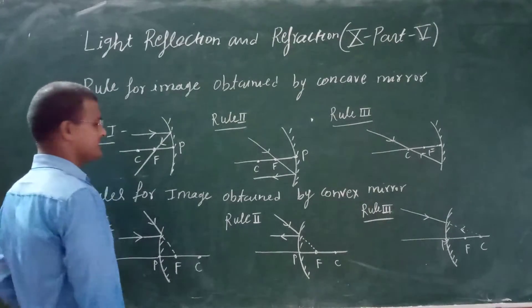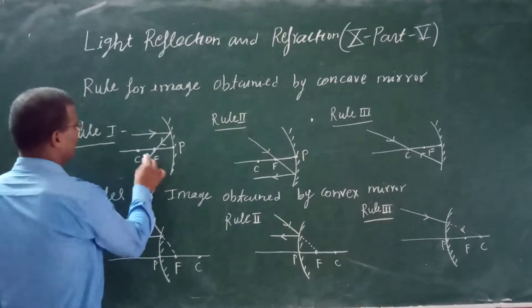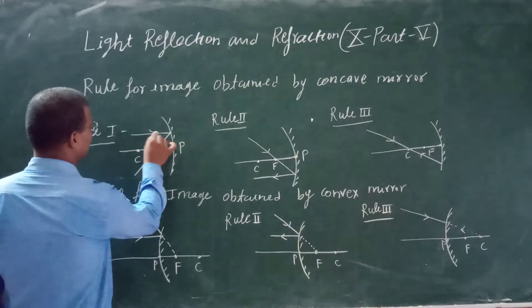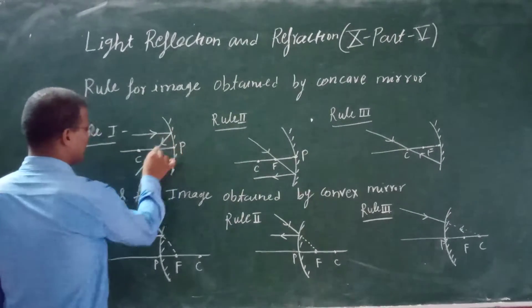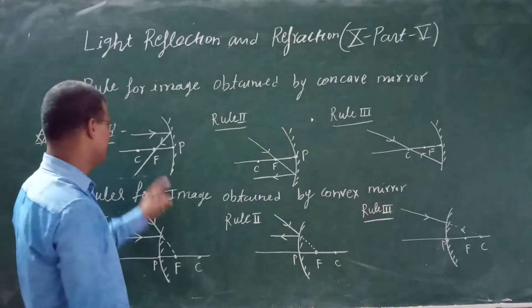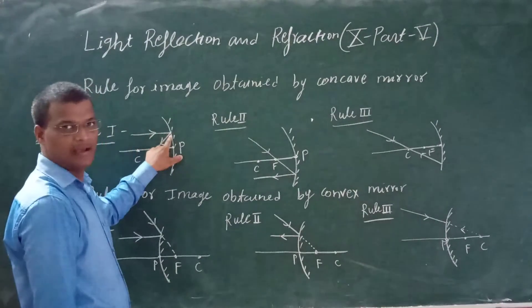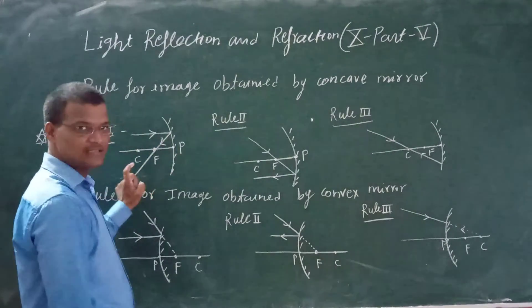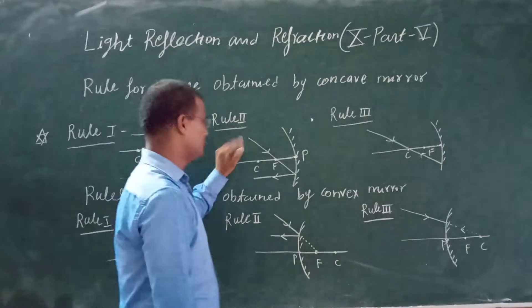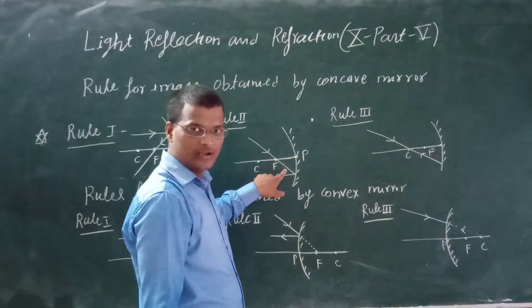What is the rule? The first rule is that if the incident ray is parallel to the principal axis, it will pass through the focus after reflection. The second rule is that if the ray passes through the center of curvature, it will reflect back along the same path.